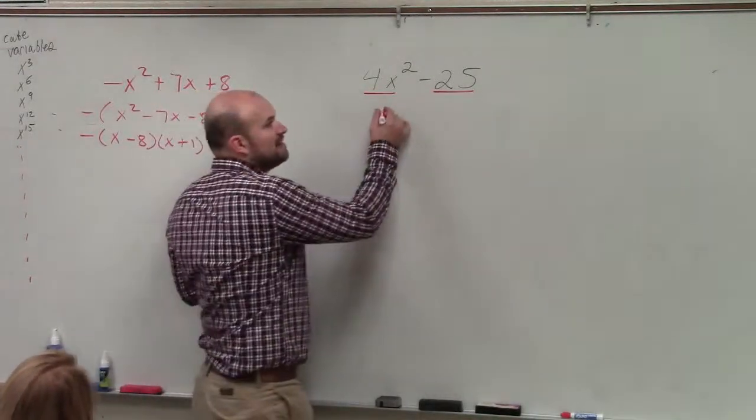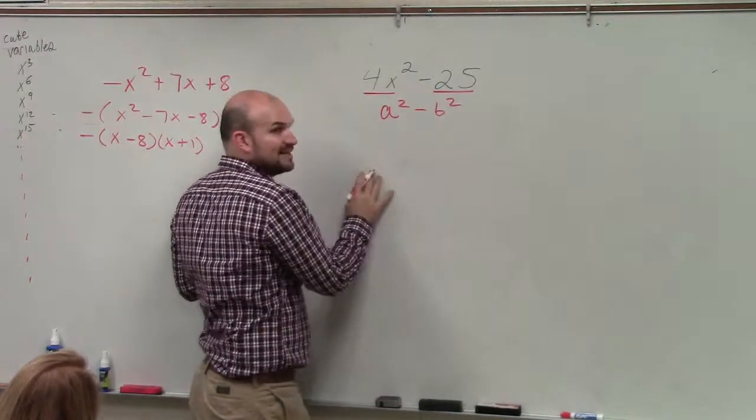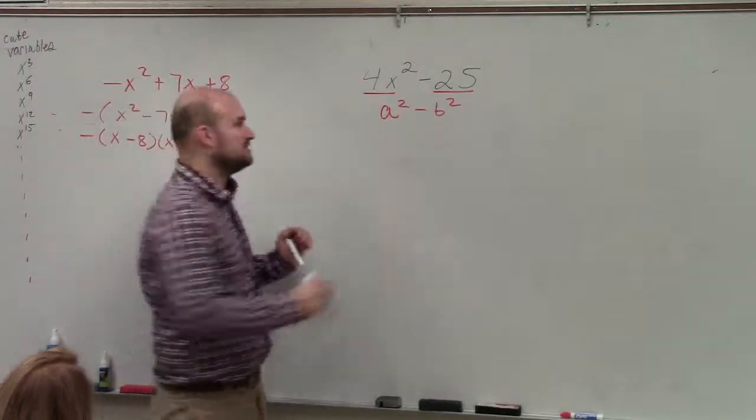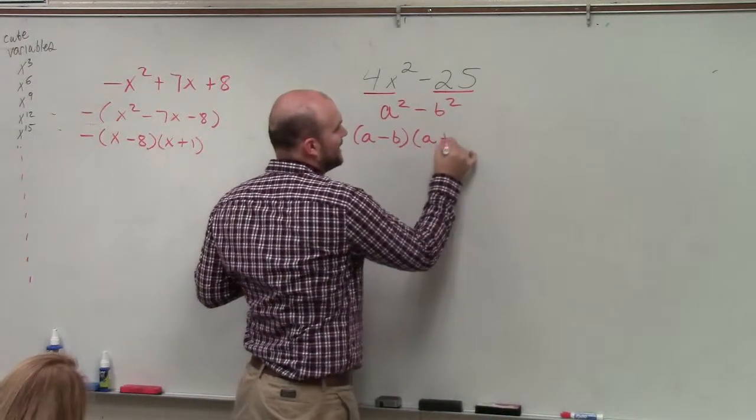So when we have squared numbers, remember, we talked about this last class period. When you have a squared term minus a squared term, without doing all the fancy stuff we just did, the factored form is a minus b times a plus b.